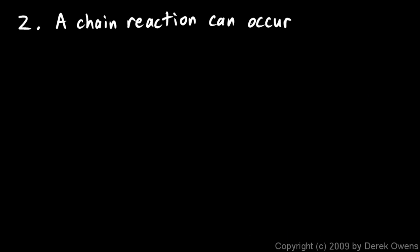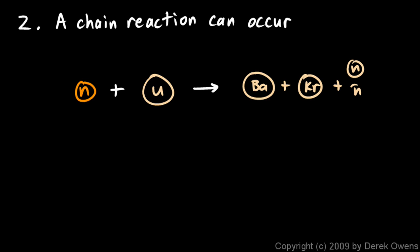The second point is that a chain reaction can occur, and here's why. Imagine our simplified diagram again. The neutron plus the uranium results in barium plus the krypton plus three neutrons. And these neutrons are flying out as a result of this reaction.